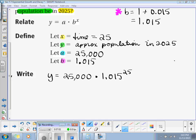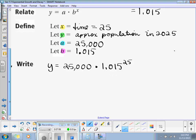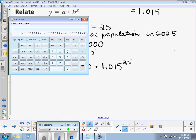So, now, all we have to do is simplify. We've got 1.015 raised to the 25th power.